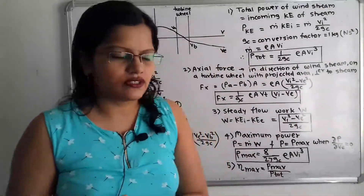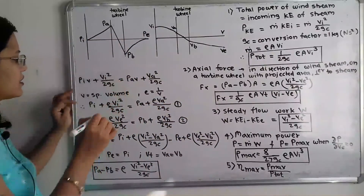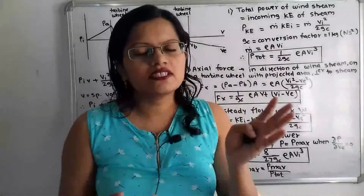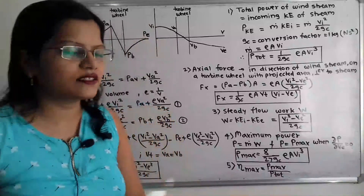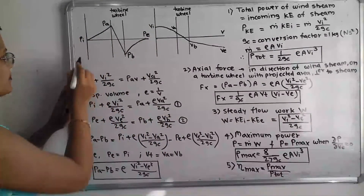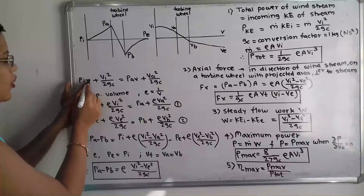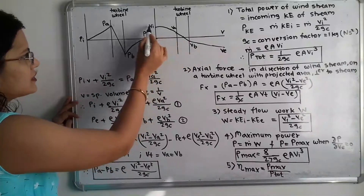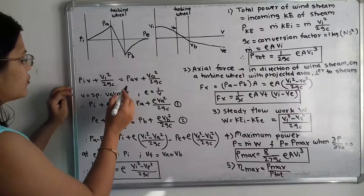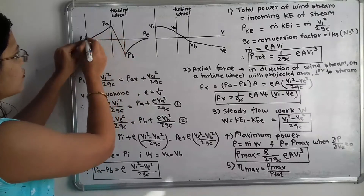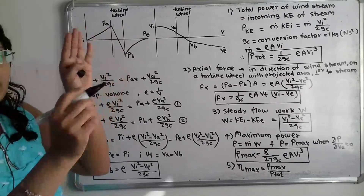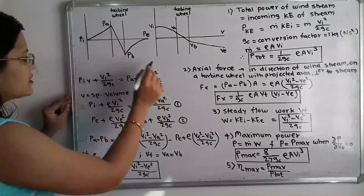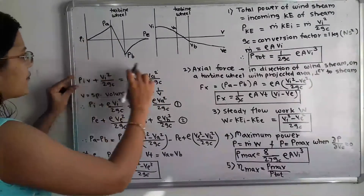We now write the energy equation relating pressure and velocity. As air passes through the turbine there is a change in both pressure and velocity. Between the inlet i and point a: pi·v + Vi² / (2gc) = pa·v + Va² / (2gc), where small v is the specific volume.